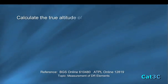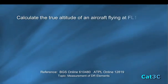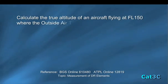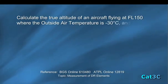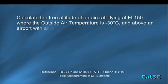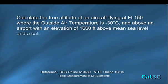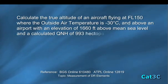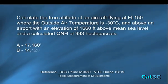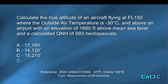Calculate the true altitude of an aircraft flying at flight level 150 where the outside air temperature is minus 30 degrees centigrade and above an airport with an elevation of 1,660 feet above mean sea level and a calculated QNH of 993 hectopascals. The optional answers are A 17,160 feet, B 14,120 feet, C 15,210 feet and D 13,660 feet.